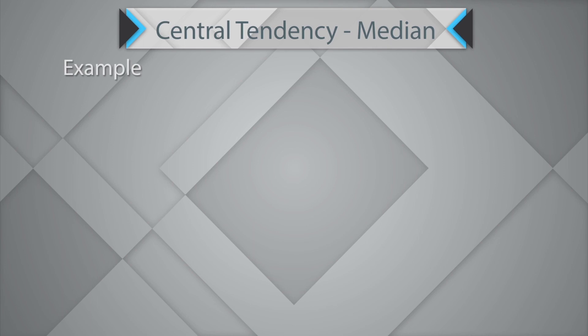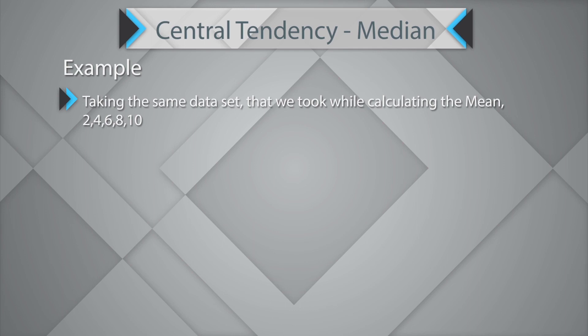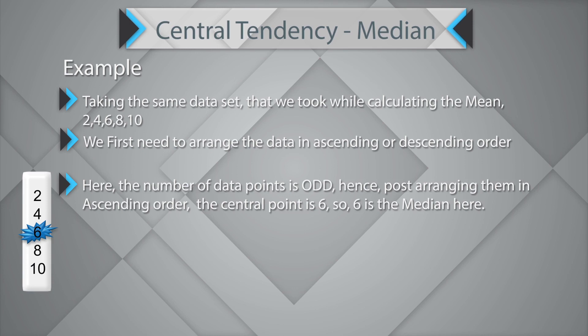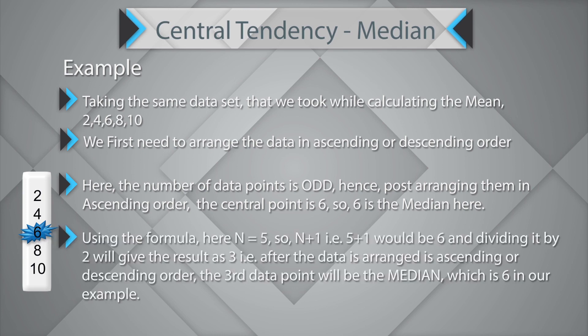Let's take an example using the same data set used for calculating the mean. The number of data points is odd — we have five data points. After arranging them in ascending order, the central point is 6, the third data point, and that shall be the median. Using the formula, n equals 5, so n plus 1 equals 6 divided by 2 gives 3, meaning the third data point from the top is the median.